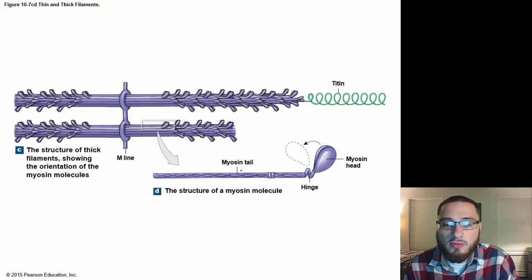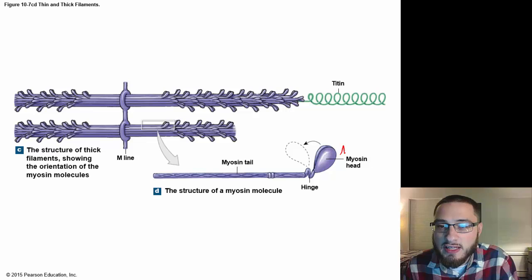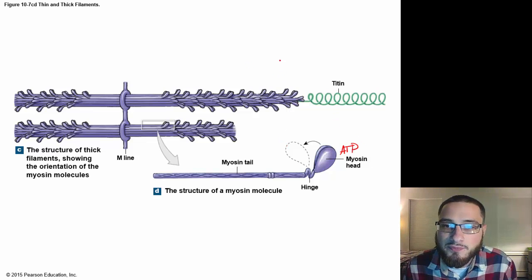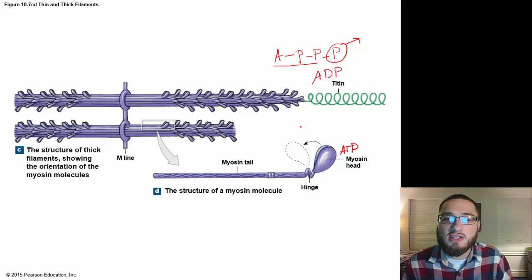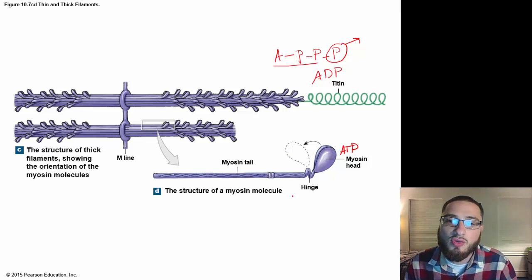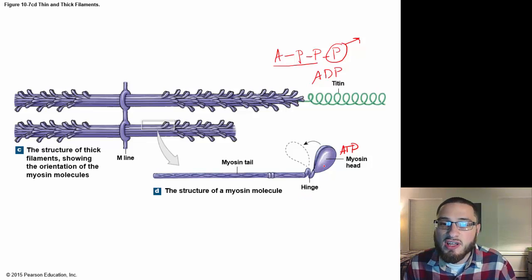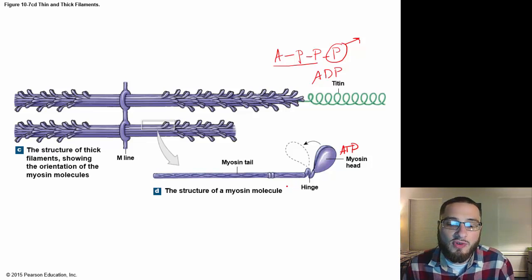Myosin has a tail and a head. The myosin heads are constantly moving if we have ATP. ATP is adenosine with three phosphate groups; to get energy, we break a bond to produce ADP — adenosine diphosphate — plus energy. We constantly need oxygen and ATP for this process, and we constantly need calcium. When you die, ATP is no longer produced and oxygen is no longer taken in, so the myosin heads freeze in place — which is why muscles stay contracted and we observe rigor mortis.